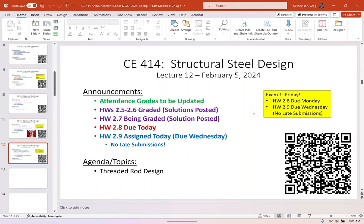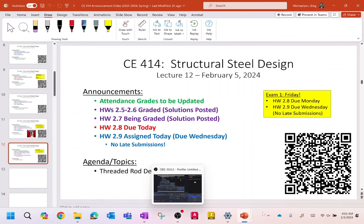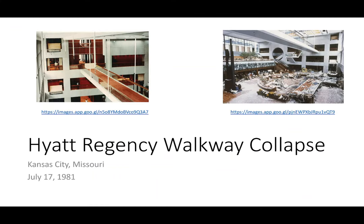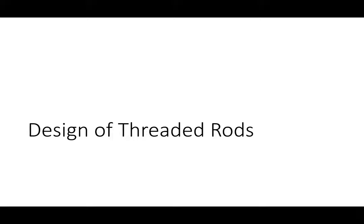Today we're going to go through our very last topic in tension members, which is threaded rod design. I actually think we will get done early because I've already done about half this lecture when we talked about the Hyatt Regency collapse. The reason it's typically mentioned at this point in the class is because the failure involved the threaded rod — a rod in tension — so it's a natural place to bring up the topic.